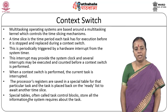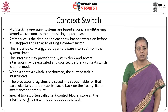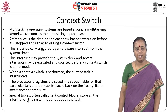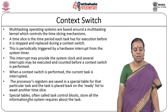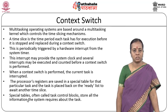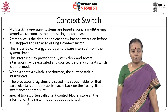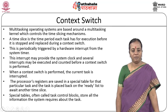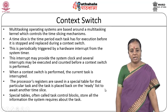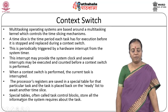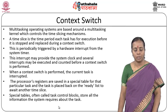When a context switch is performed, the current task is interrupted. The processor registers are saved in a special table for that particular task, and the task is placed back onto the ready state list. The system puts that particular task in a ready state — only the CPU is being scheduled for some other task. After that, the task is in a ready state list and it is waiting for the next time slice. The special tables, often called Task Control Blocks, store all information the system requires about that particular task.